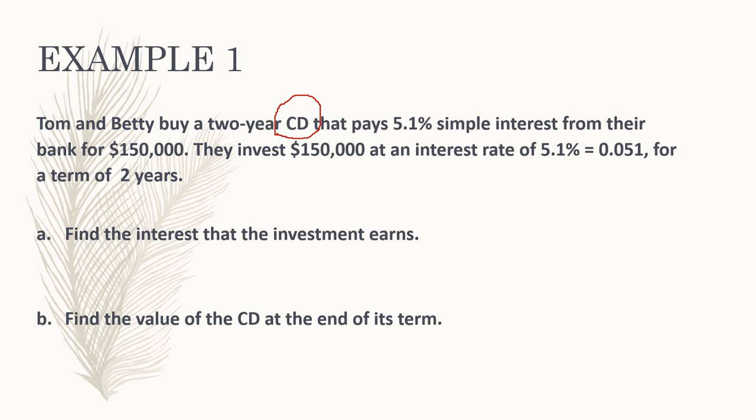The difference between a CD and a savings account is that a CD has a fixed term and usually a fixed interest rate. You go into a bank and tell them you want to invest your money. Tom and Betty are buying a two-year CD, so they're promising the bank they'll leave their $150,000 in the bank for two years at a 5.1% simple interest rate. At the end of two years, they can withdraw their money having earned interest — the bank rewards them for holding their funds.